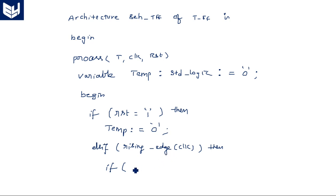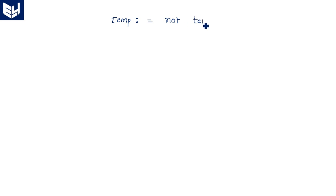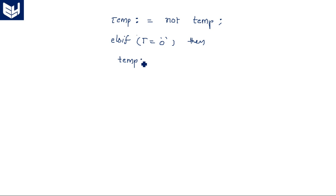So on the rising edge of the clock, if T equals one then toggle: tmp := not tmp — whatever the previous state is, it is complemented every time. Else if T equals zero, then tmp := tmp, meaning it maintains the same previous state — no change.